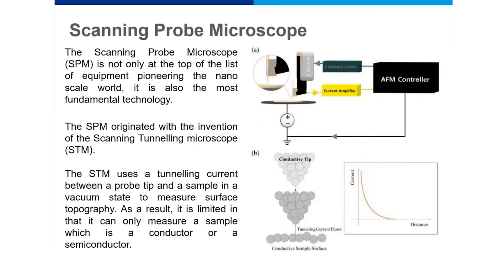Here is a quick history of scanning probe microscopy, or SPM. It is not only at the top of the list of equipment pioneering the nanoscale world — it is also the most fundamental technology. Following the first generation of optical microscopes and the second generation of electron microscopes, I feel that SPM has every right to be recognized as the third generation of microscopes, enabling users to glimpse the nanoscale world.